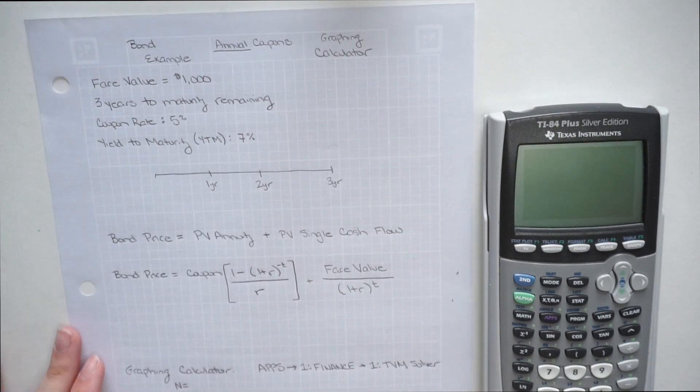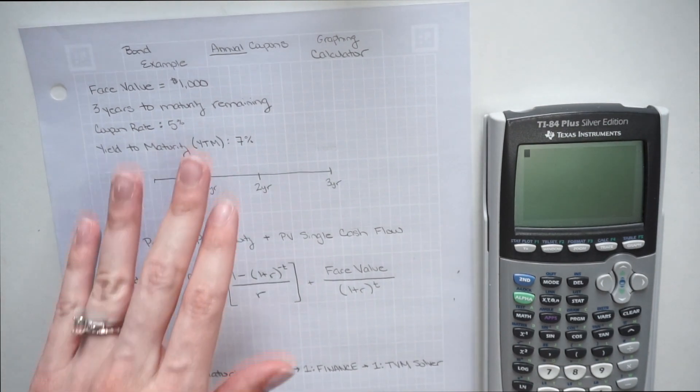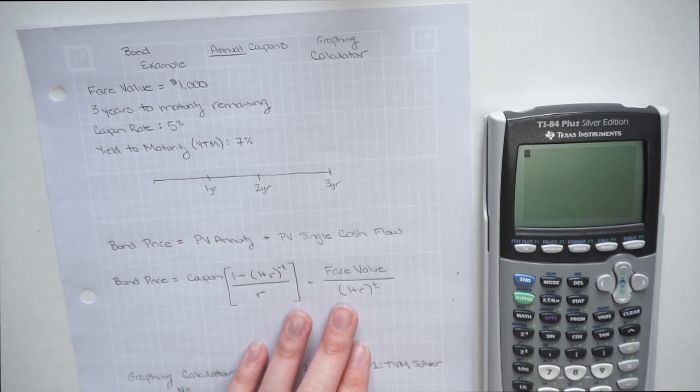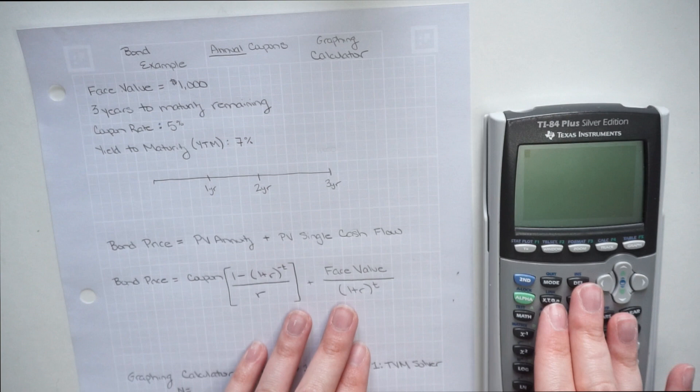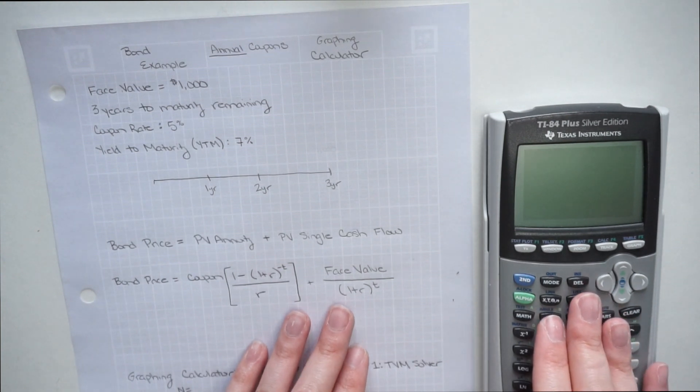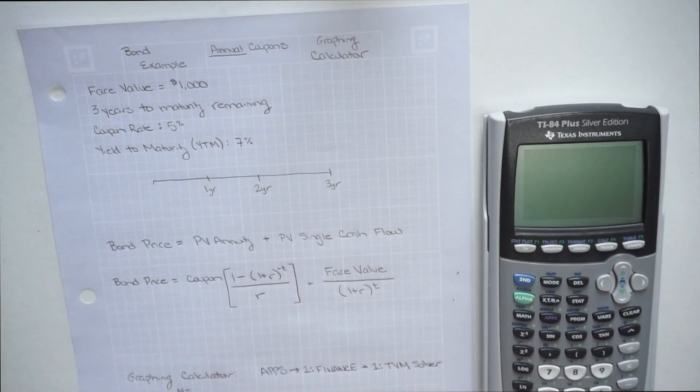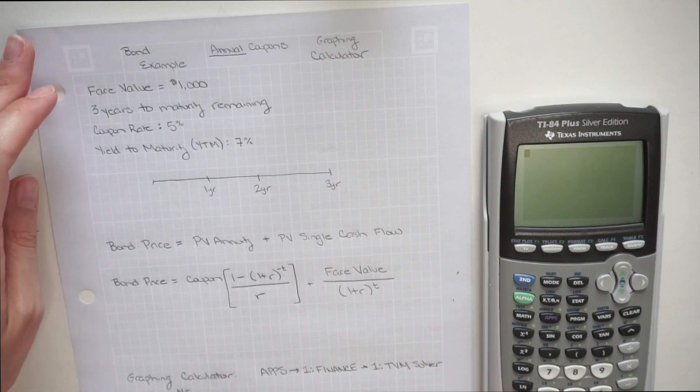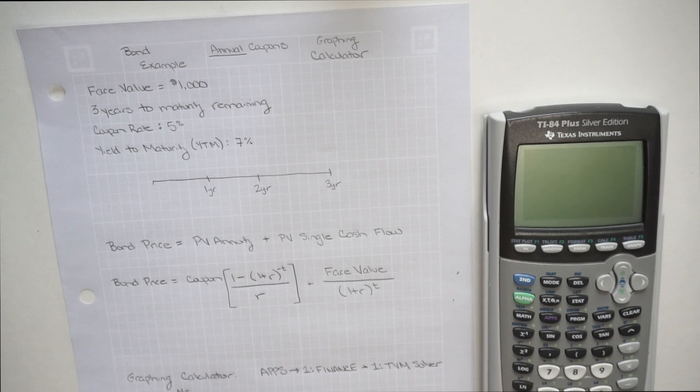The application I'm going to be showing you today is a bond with annual coupons. First, I'm going to show it to you using the equation method. Then once we solve it using the equation, we're going to use the time value of money functions in our calculator to solve the exact same problem. If you're just interested in either the formula or the calculator version, I have each one of the video breakpoints linked down below. I'll also have this note sheet that I'm filling out throughout this video today linked down below as a PDF as well.